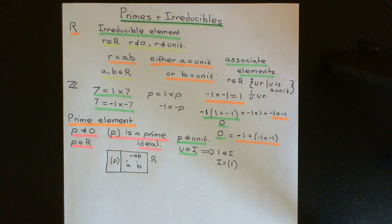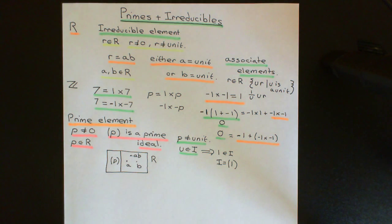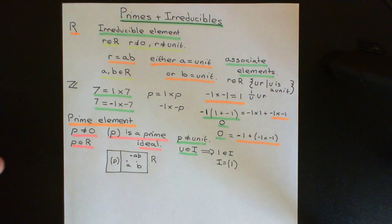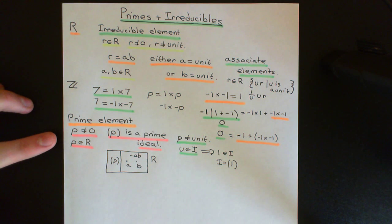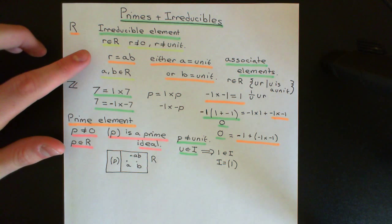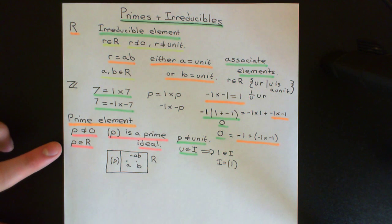Welcome back to this next video in which we are discussing primes and irreducibles. In the previous video we saw the definitions of an irreducible element and a prime element within a general non-zero commutative ring. What we're now going to do is see how these definitions interlink in special types of non-zero commutative rings. Firstly we're going to look at integral domains, and in an integral domain it will be the case that all prime elements are irreducible elements. But you can't prove it the other way around — you can't prove that all irreducible elements are prime elements.